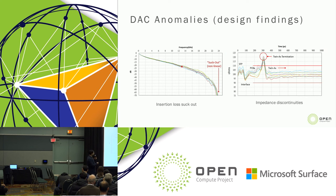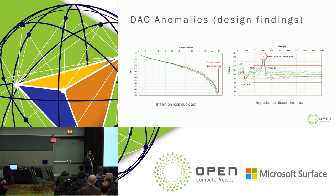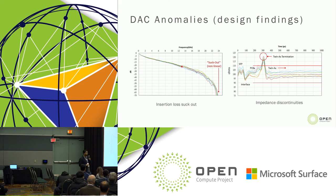Here are a couple of interesting anomalies found when characterizing direct attach copper cables. The graph on the left shows an insertion loss suck-out as a function of frequency, which we correlated back to the construction of one of the DAC cables and were able to fix. On the right, there is a deviation in characteristic impedance visible in a time-domain reflectometry plot on a Q2-4S cable — TDR done from the SFP side — which we found could significantly affect end-to-end performance of the link from the TOR to the NIC.